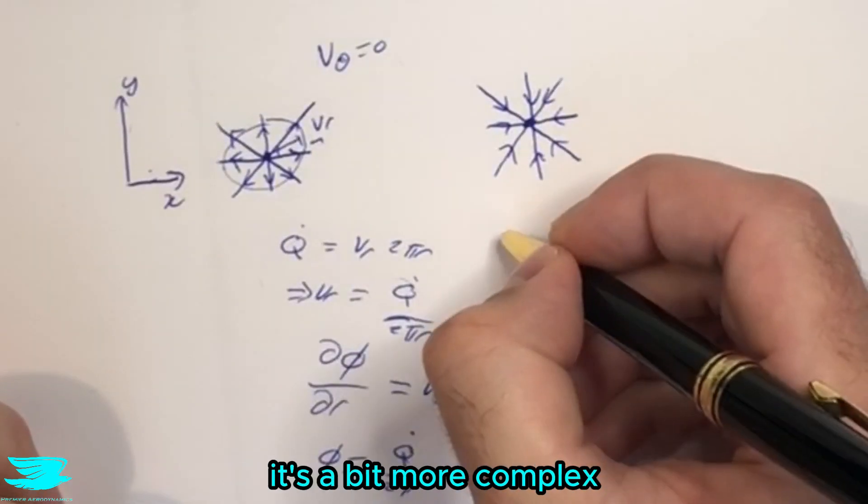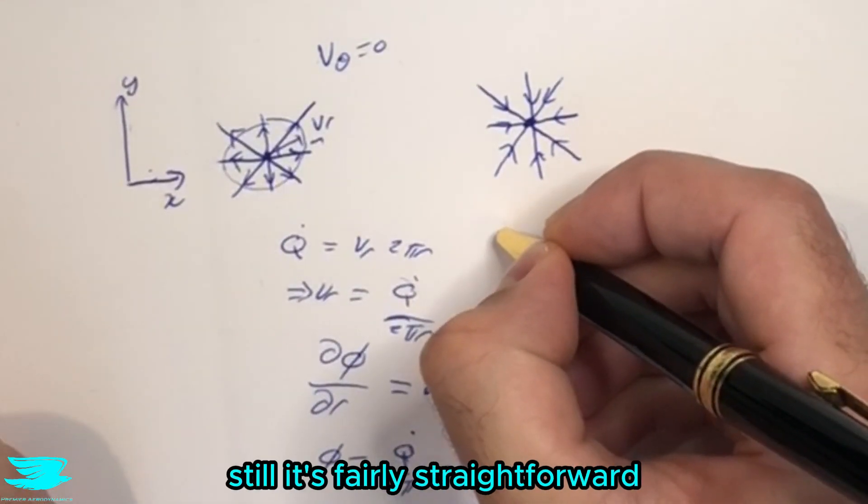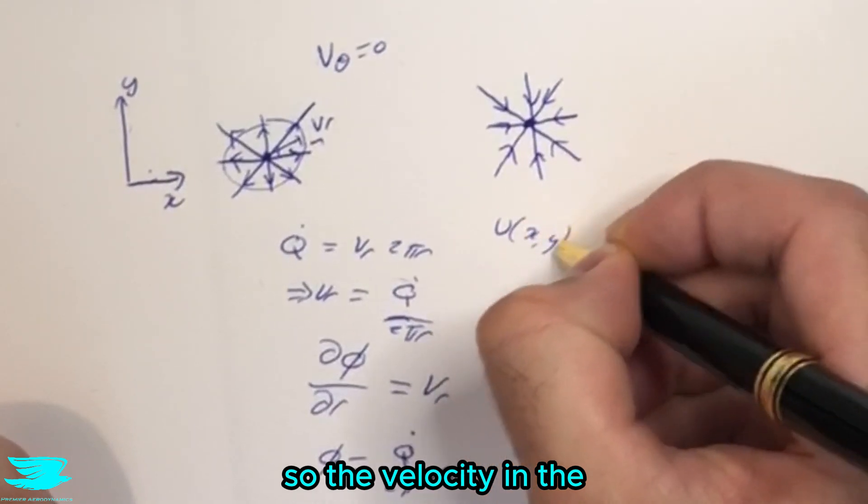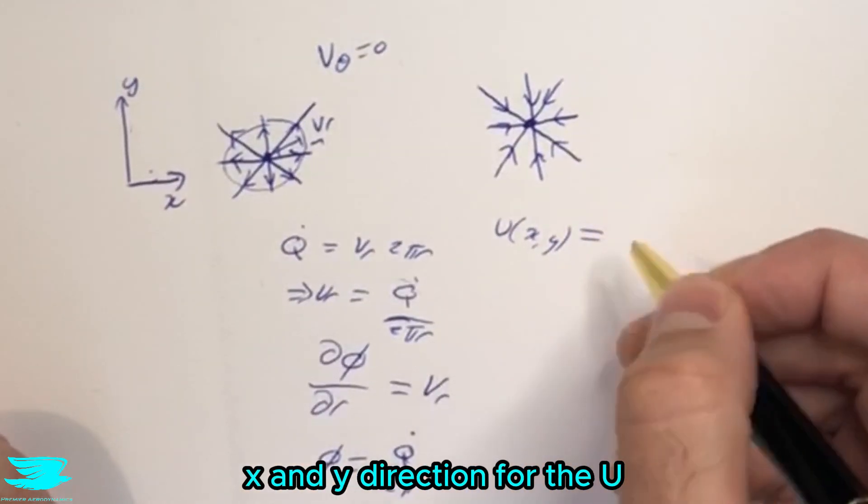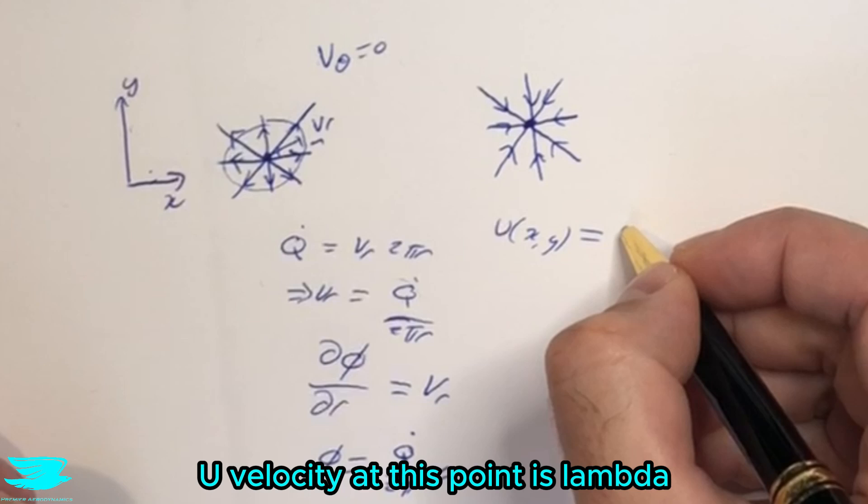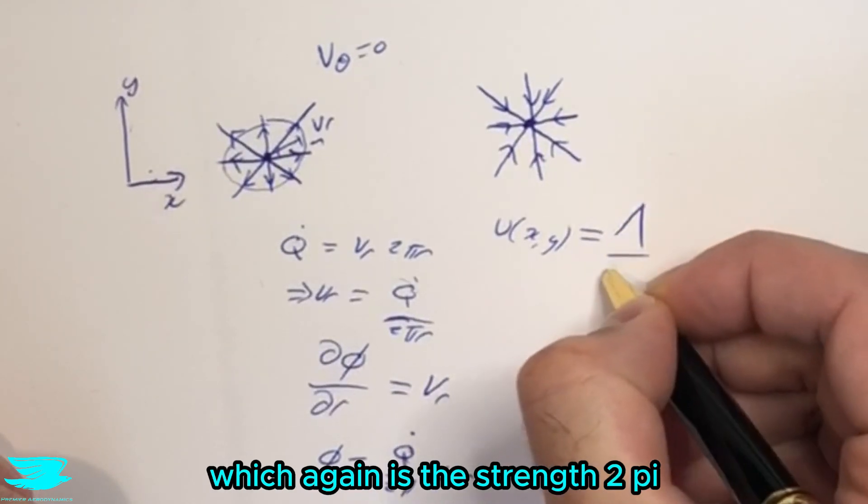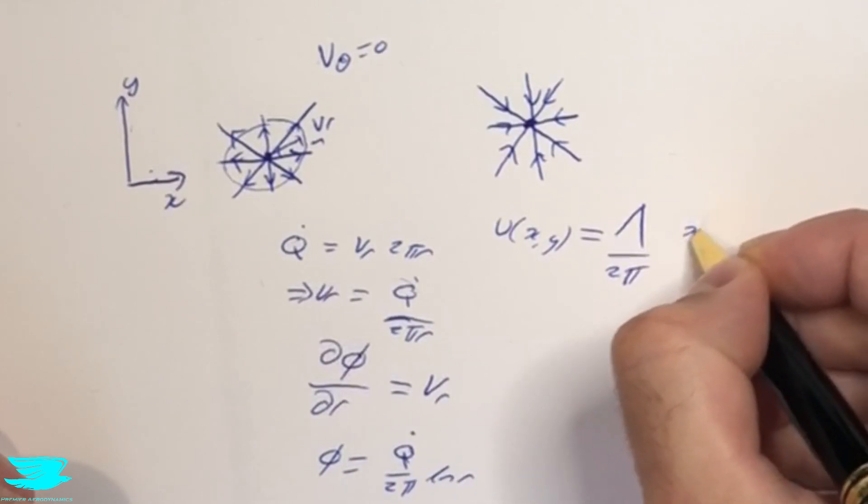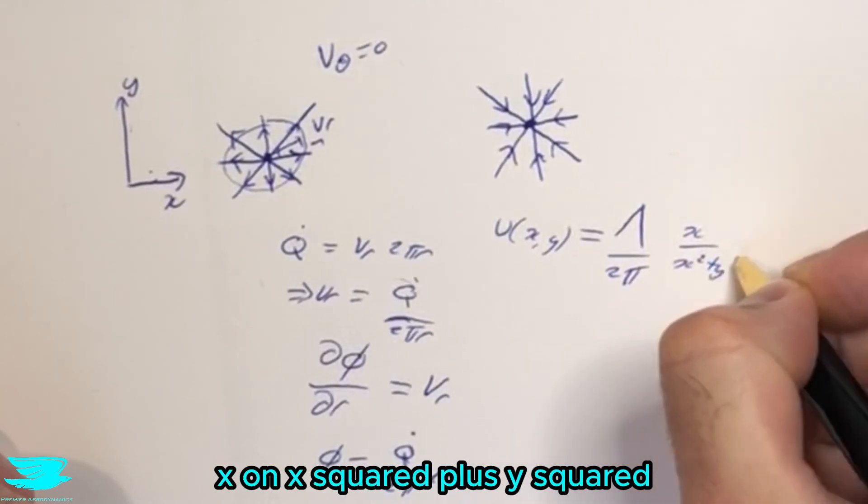Well, this is also pretty simple. It's a bit more complex because it's Cartesian, but still it's fairly straightforward. So the velocity in the x and y direction, the u velocity in this direction is λ, which again is the strength, over 2π, this is another notation that you will see in textbooks a lot, times x over x squared plus y squared.